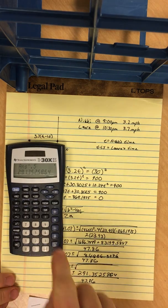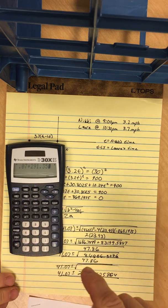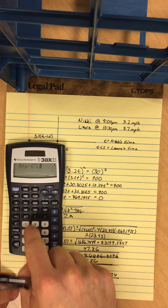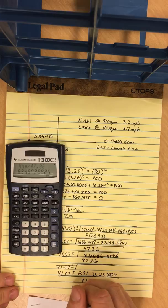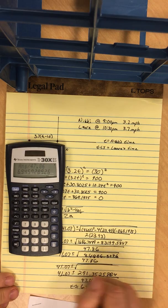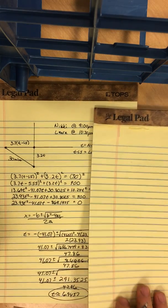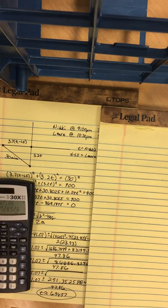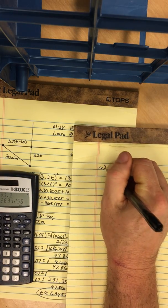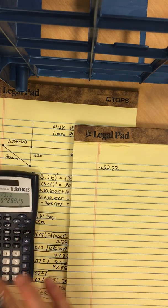So I'm going to have to use the positive version because time has to be positive here. So 41.07 plus 291.3525864 is that number, divided by 47.86 is a time value of about 6.9457. And I am not sure about this. So I want to double check this. So that's the time value. And that's Nikki's time. So Nikki is traveling south at 3.2 miles an hour. So if I multiply that with 3.2, that means Nikki's traveled about 22.22 miles. And I'm going to undo that.